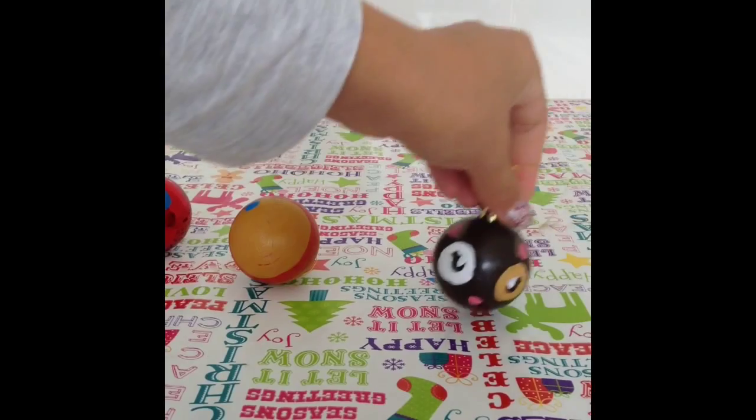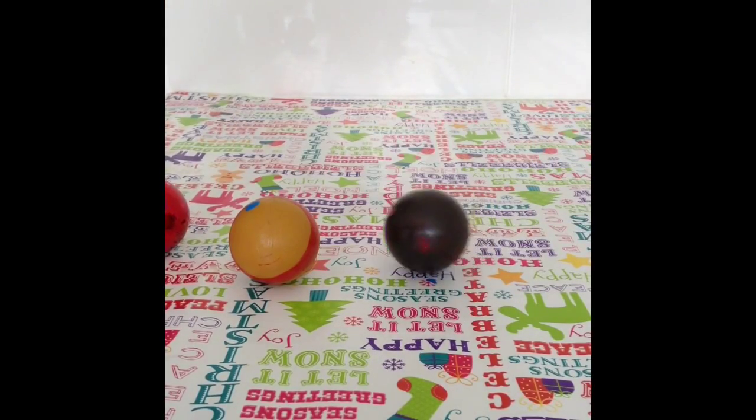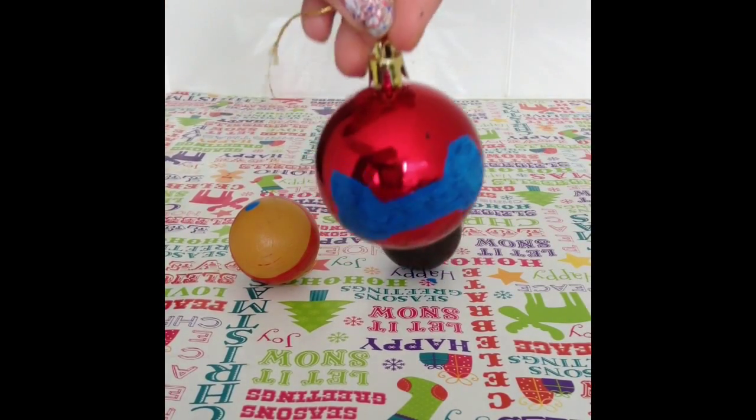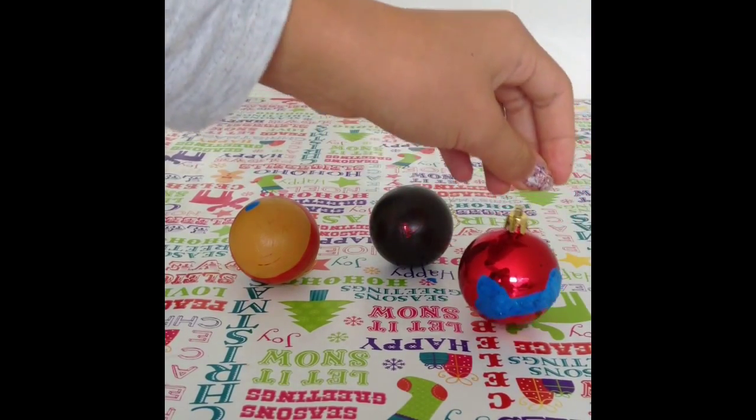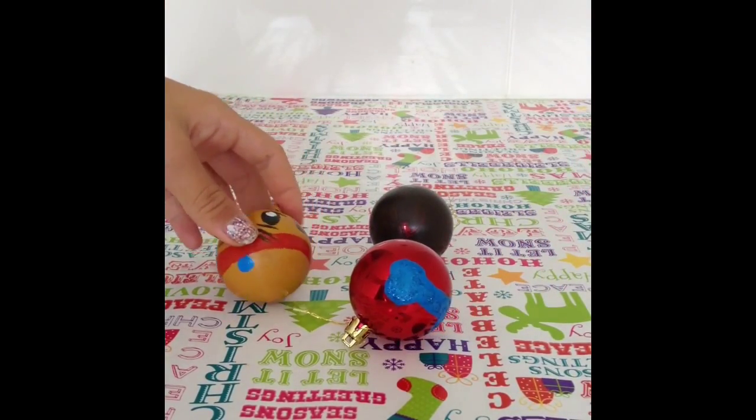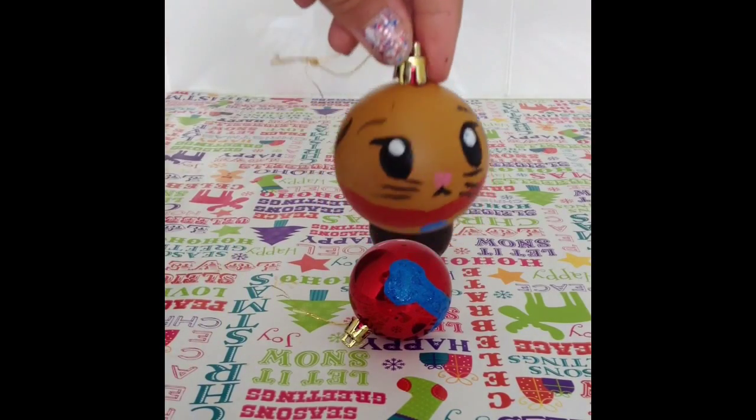So this is the black one. This is the blue one with the bow. And this is the yellowy honey brown one.